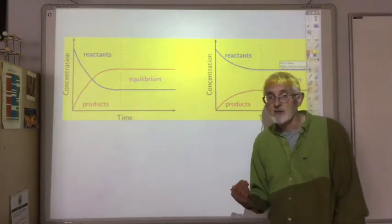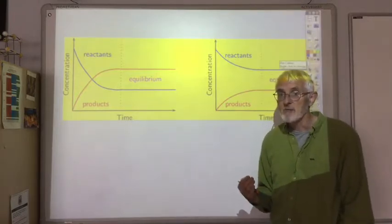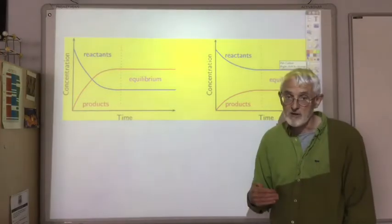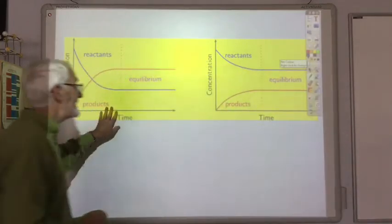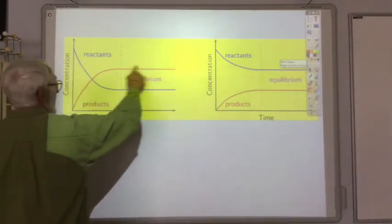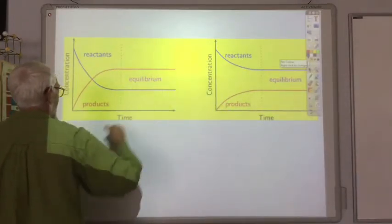Depending on the reaction, the equilibrium point might have a lot more reactant than product. Or you might have more product than reactant. So, in this case here, we've got quite a lot of product and less reactant.